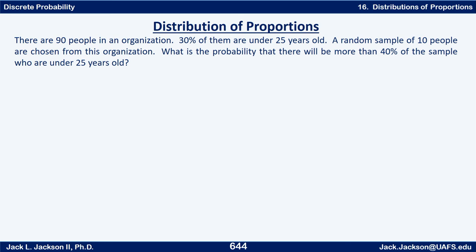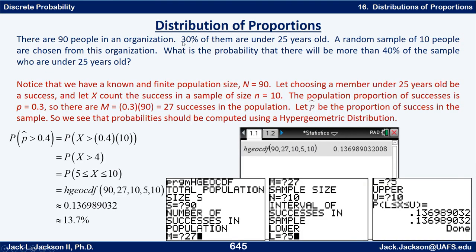Example one: There are 90 people in an organization. 30% of them are under 25 years old. A random sample of 10 people are chosen. What is the probability that more than 40% of the sample are under 25? There is a finite and known population size of N equals 90. If x is the number of successes — a person under 25 — in our sample, x follows a hypergeometric distribution, so the proportion also has essentially a hypergeometric distribution. The sample size n is 10, and 30% of 90 is 27, so capital M equals 27 successes.